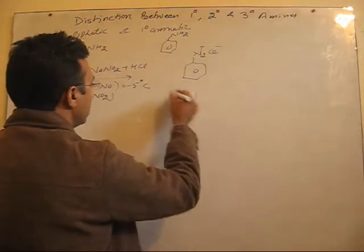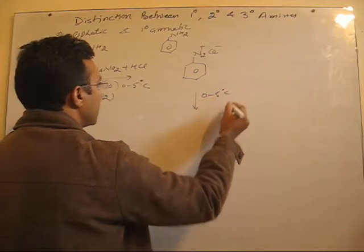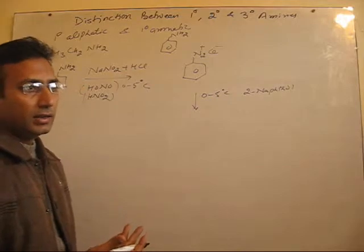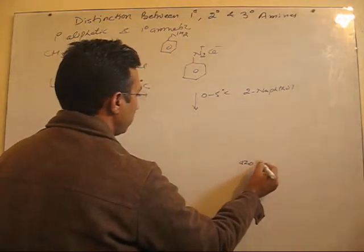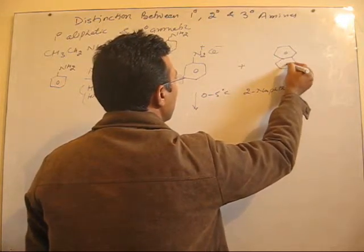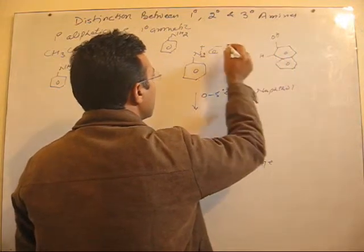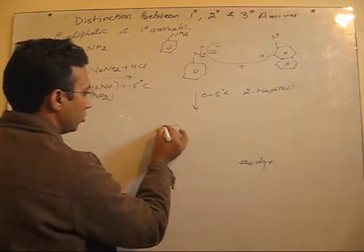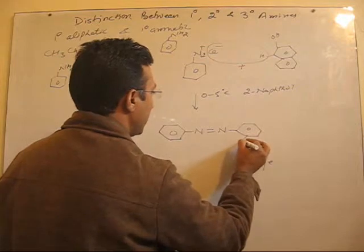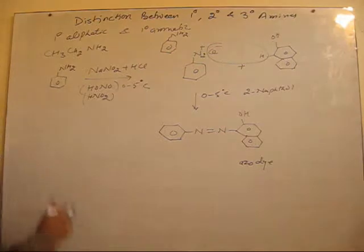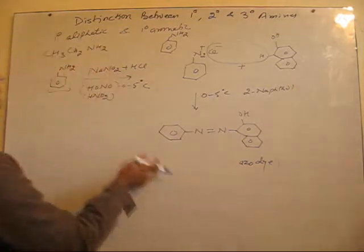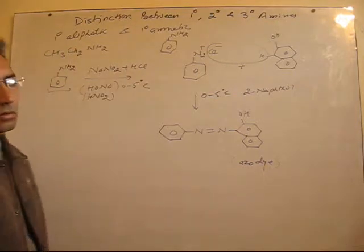Once you get benzene diazonium chloride, at the same very low temperature near 0°C, if it is treated with 2-naphthol, or phenol, or aniline, they form an azo dye. For example, treating with alpha-naphthol (2-naphthol) leads to formation of an azo compound containing a nitrogen–nitrogen double bond. This colored dye is formed only with aromatic amine, that is aniline, and this reaction is not given by ethanamine.